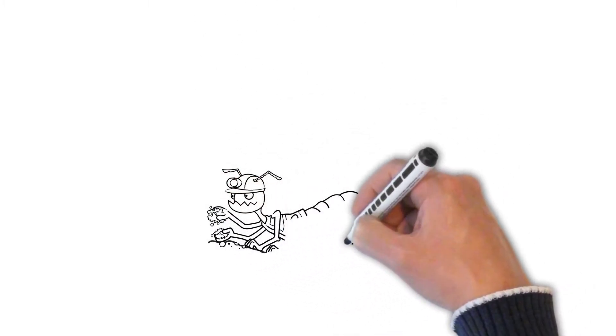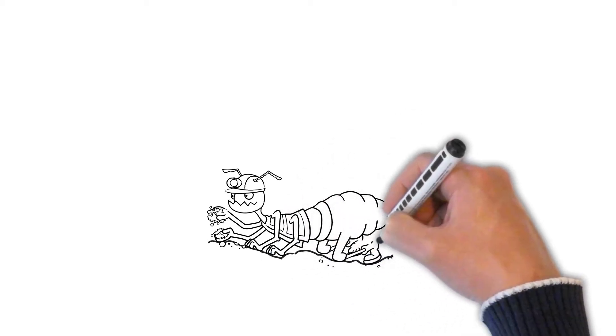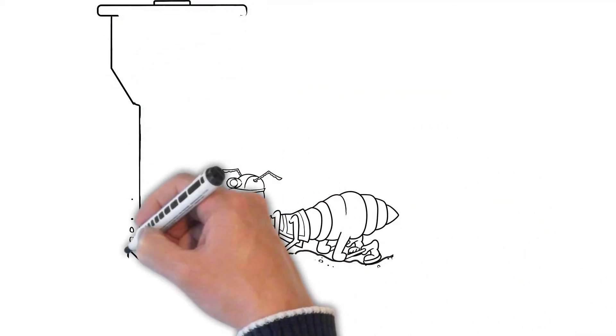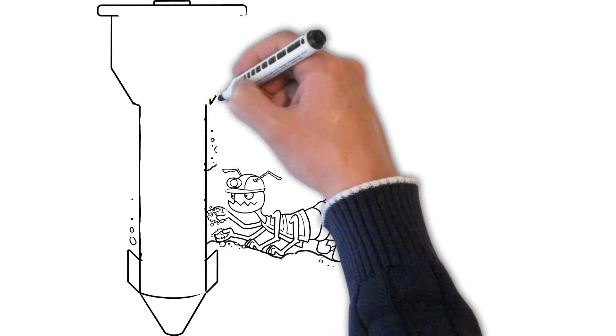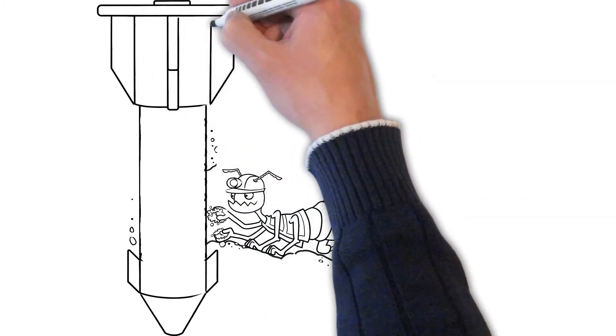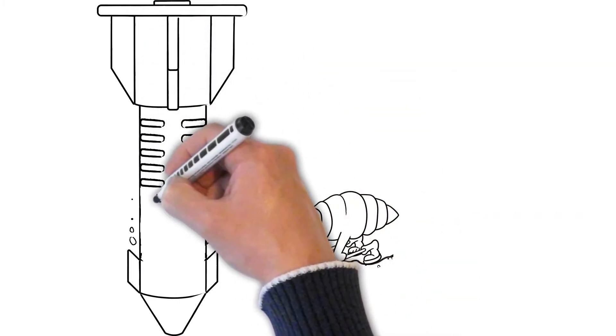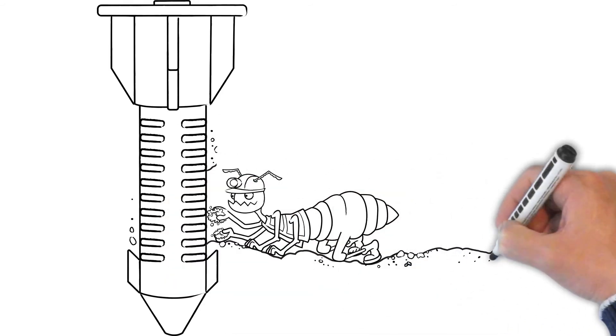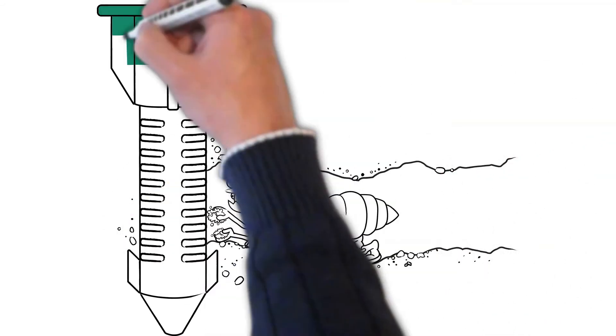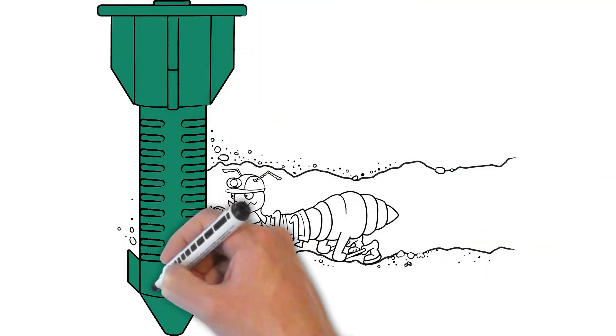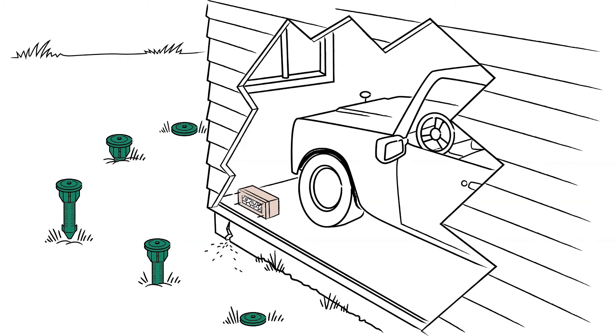So the scenario happens like this: Willy the worker happens upon a Sentricon bait station. He eats the bait because it's been proven termites prefer the bait over wood. Then he heads back to serve up a nice feast for his friends in the colony. Except this feast will be lethal, and right to the heart of the colony.